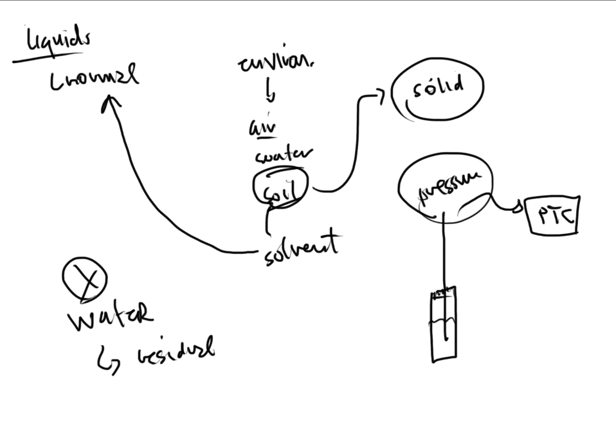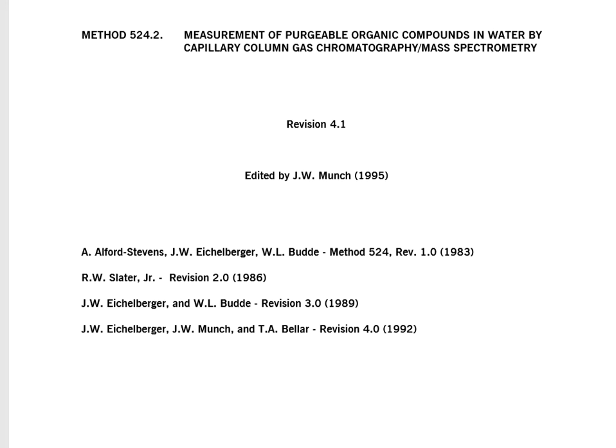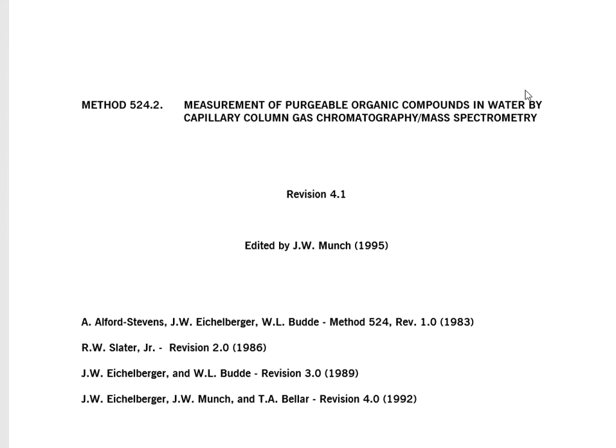We want to take a look at a real method — what are people really doing with the purge and trap system? In this module folder you'll find another document. It's 47 pages long and concerns Method 524.2. This method allows us to extract volatile organics out of a sample and inject them onto a GCMS system with a capillary column. We're going to be doing something similar in the lab when we use our purge and trap system, but it won't be this robust or complicated.